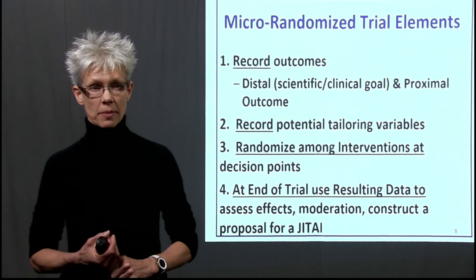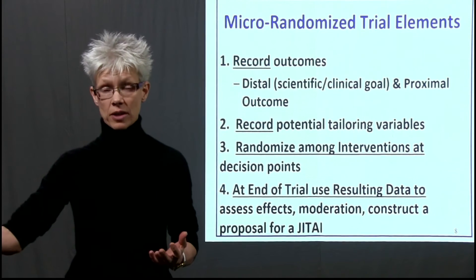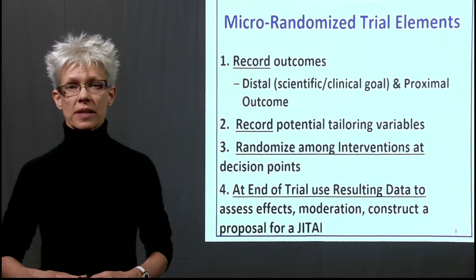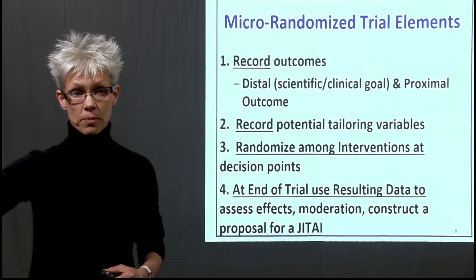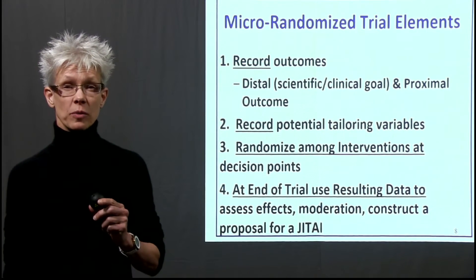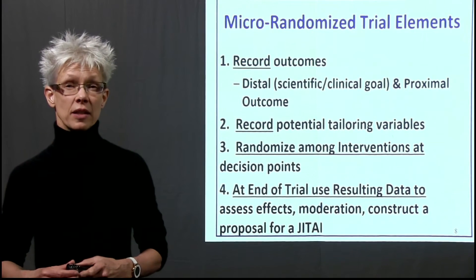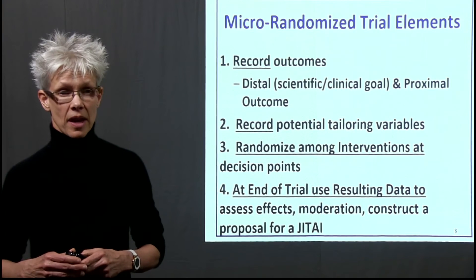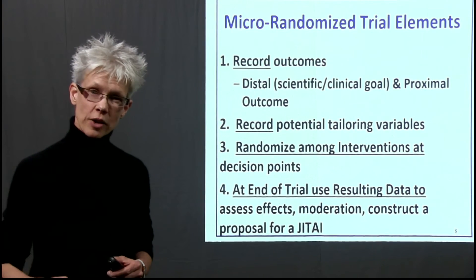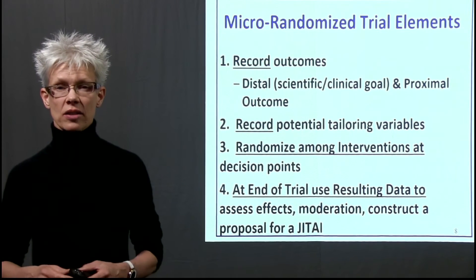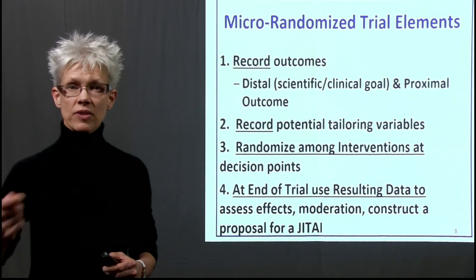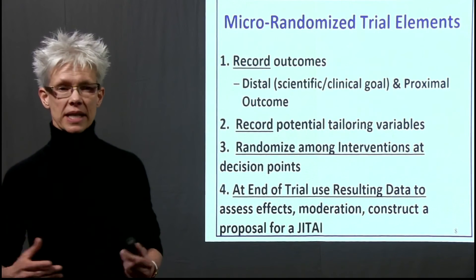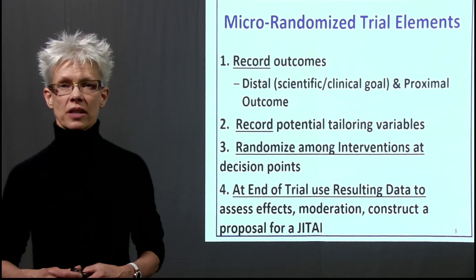Let's go through the elements of a micro-randomized trial. We always record our outcomes: the distal outcome is time till relapse, and the proximal outcome is the amount of stress in the subsequent hour after a decision point. Our tailoring variable — the primary one — is stress. At each decision point, we randomize between providing a reminder versus not. At the end of the trial, we assess causal effects: whether stress impacts the effectiveness of the reminder, or whether location impacts effectiveness. Then we construct a proposal for a just-in-time adaptive intervention.